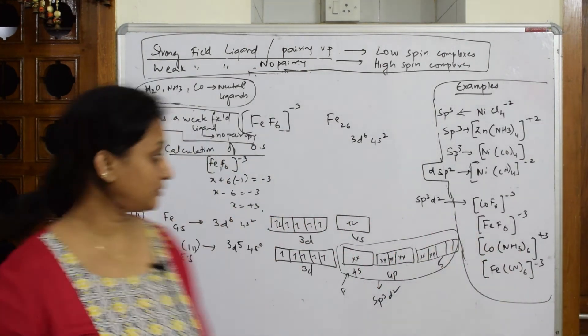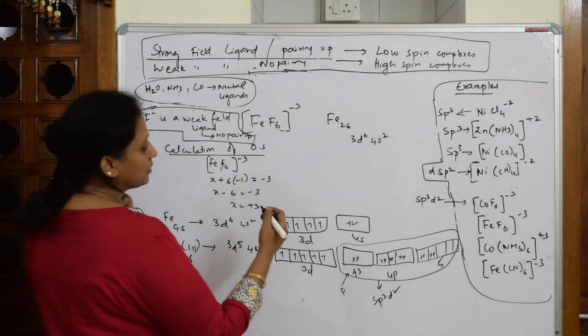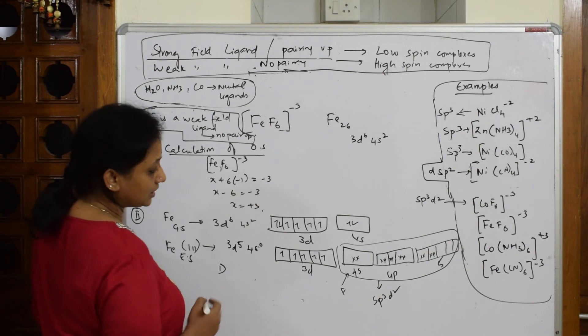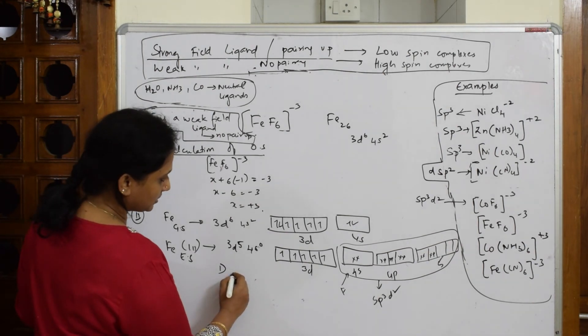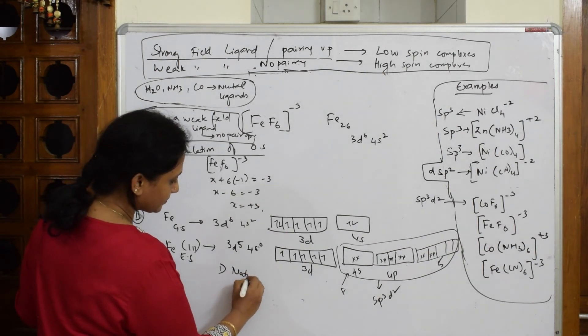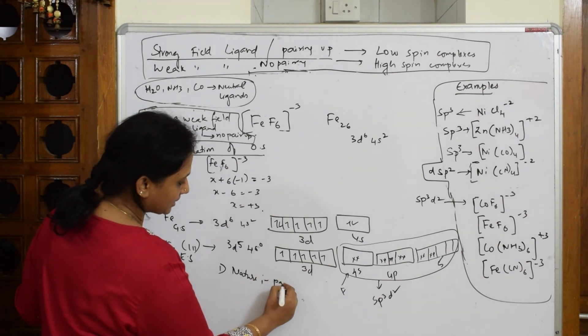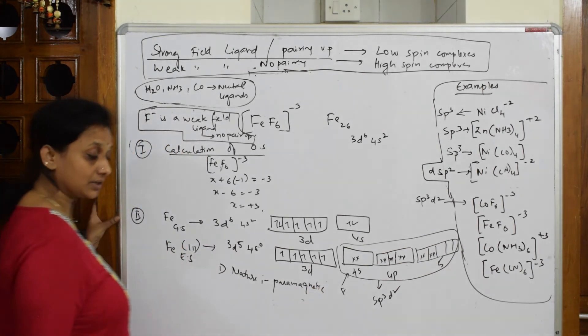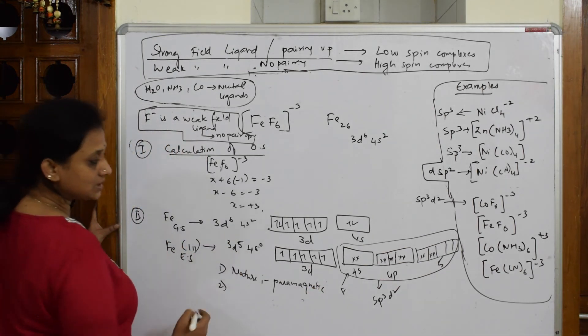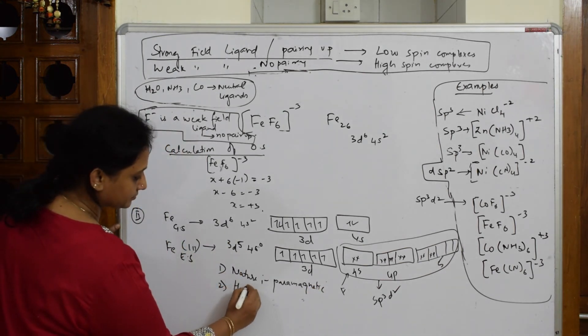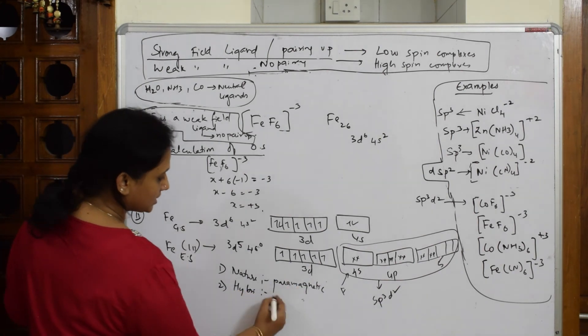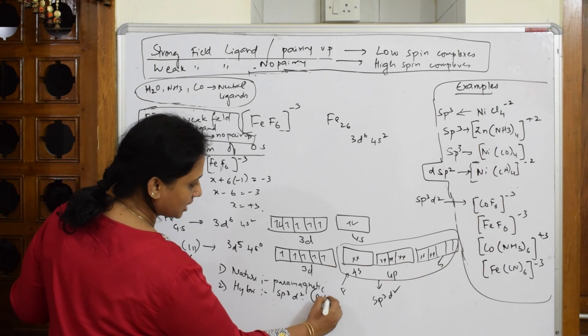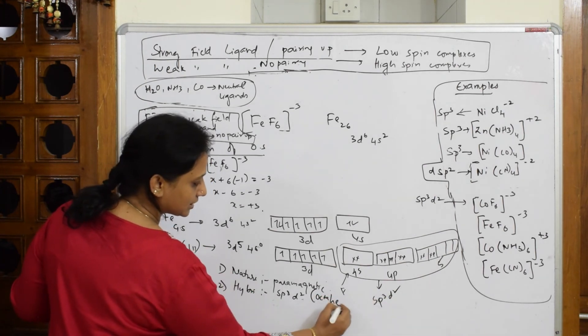Now I have to write the type of parameters, isn't it? What are the parameters? First parameter: what is the nature? When I have to write the nature, this is paramagnetic in nature because all are unpaired. Next, what is the hybridization? Same thing, isn't it? sp3d2. So the geometry is octahedral: 3, 4, 5, 6. It is octahedral.